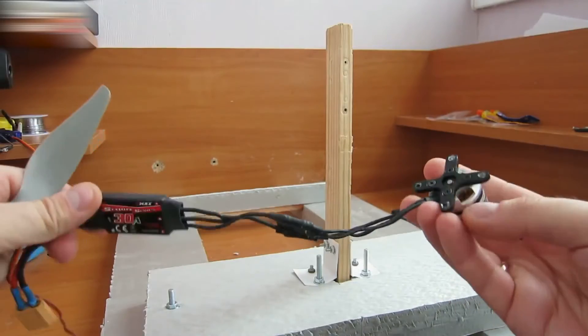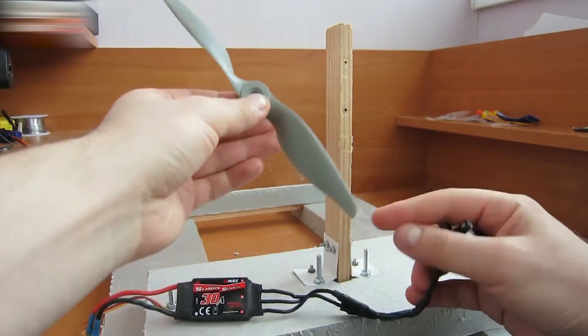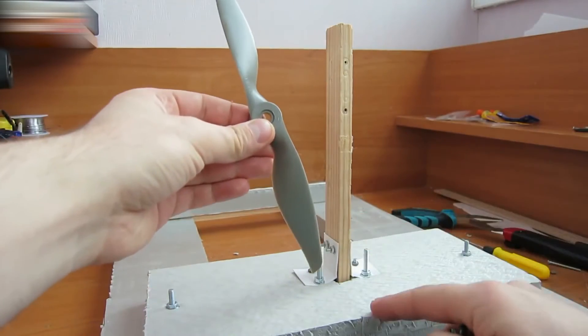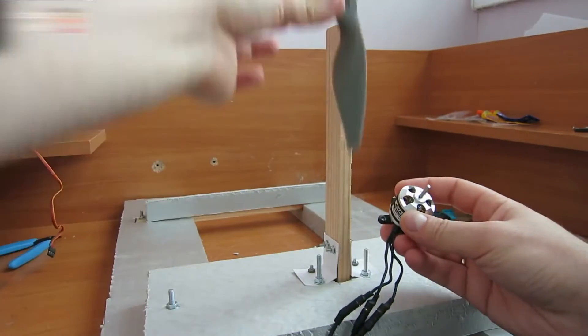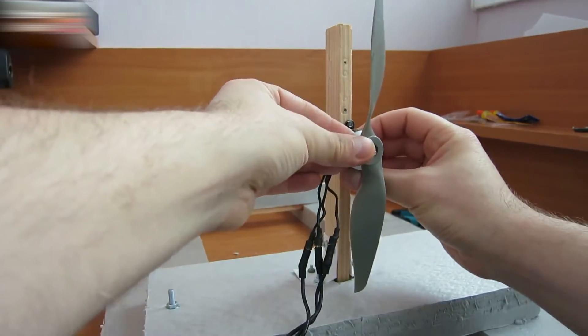Fasten the motor and the propeller. Make sure that the edge of the fan almost reaches the base. It shouldn't be placed higher than the base. Like this.